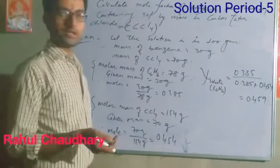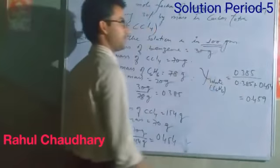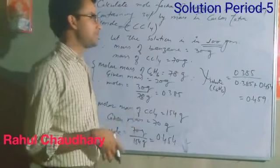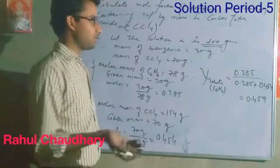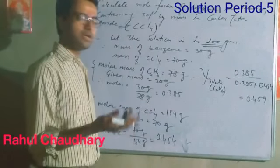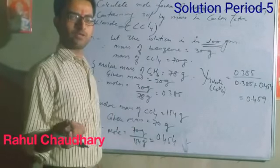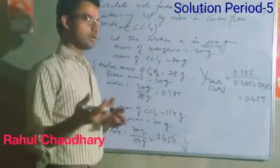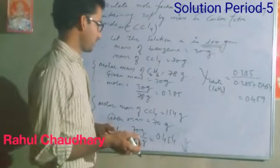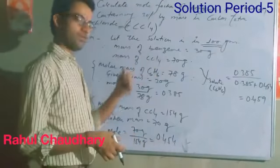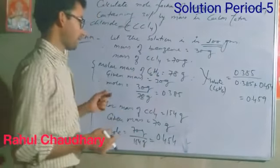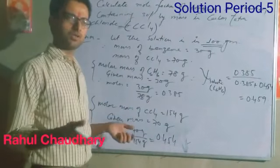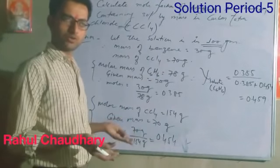Let us suppose the solution is present in 100g. According to the question, in 100g solution, 30% is benzene, so mass of benzene (solute) is 30g. That means solvent mass is 70g. So mass of CCl4 is 70g.